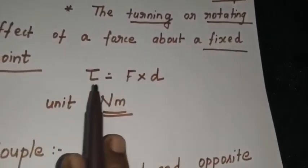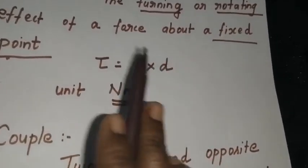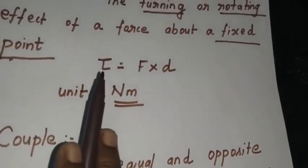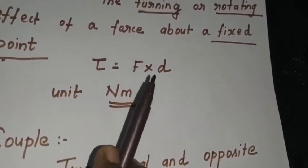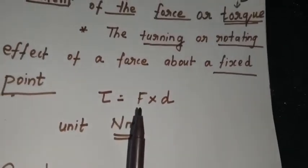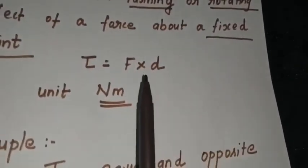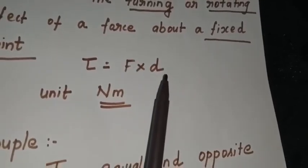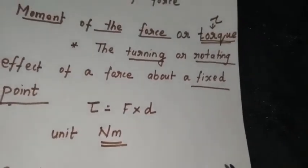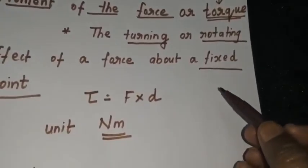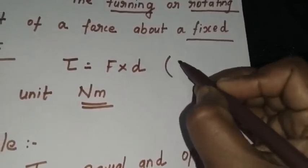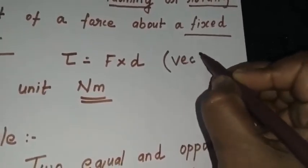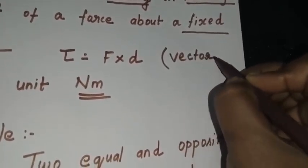Tau is equal to F into d, so torque is nothing but the product of force and distance. The moment of force is the product of force into distance. Very importantly, torque — or moment of force — is a vector quantity.